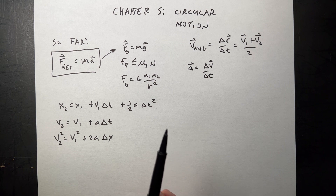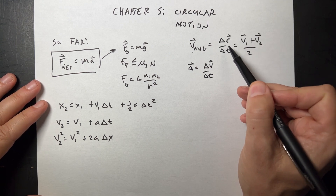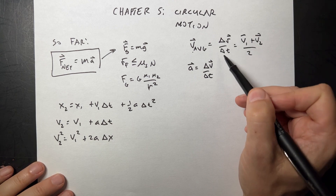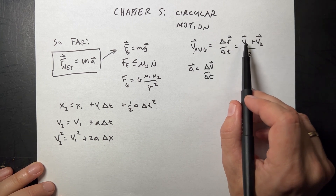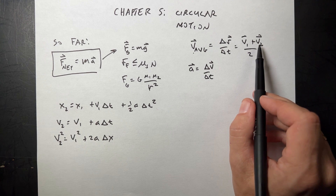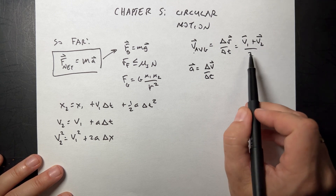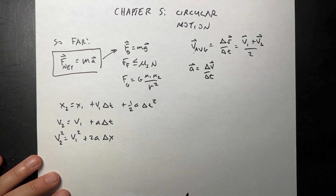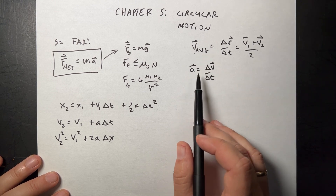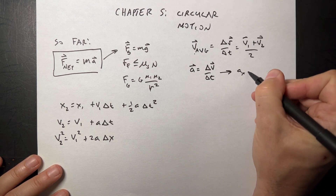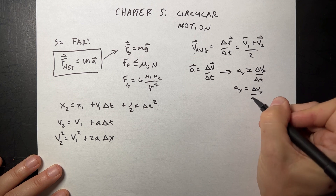From that, we looked at kinematics. We have the definition of average velocity — it's the change in position (using r for position) divided by the change in time. It's the rate of change of position, but it's average. If the acceleration is constant, you can write the average velocity as the sum of the initial velocity plus the final velocity divided by 2.